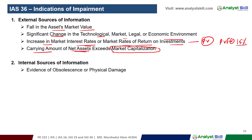Internal sources of impairment indicators include physical damage to the asset. Adverse changes in the use of the asset are also an internal indicator.